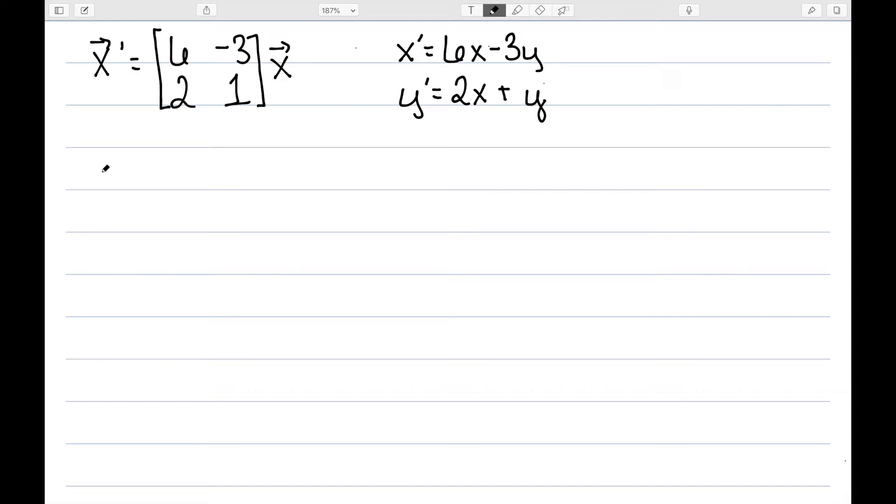So that tells me my actual general solutions are of the form c1 times the first vector, [e^(3t), e^(3t)].